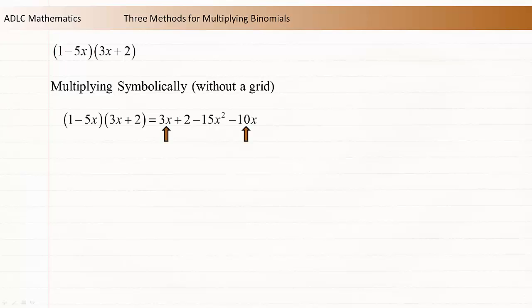But as before, there are like terms. The 3x and the negative 10x terms combine to give negative 7x. The other two terms remain unchanged. Finally, write the terms in descending order by degree.